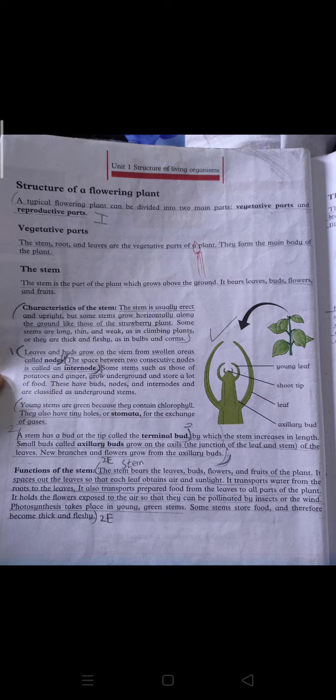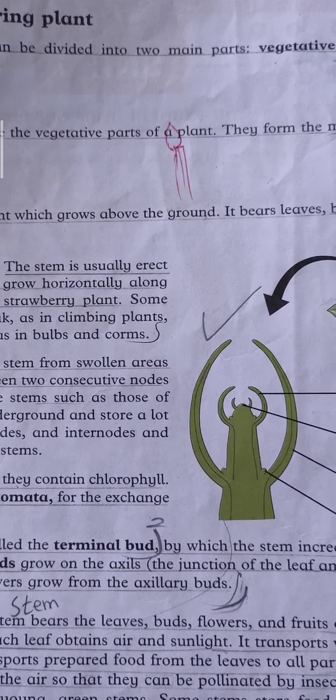The stem is the important part of the plant because leaves are attached to it, which make food, transport food. They form the plant and then the fruit grows. So let's begin the stem. The stem is the part of the plant which grows above the ground and it bears leaves, buds, and flowers and fruits.